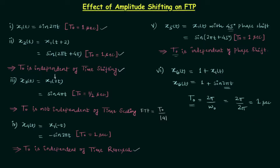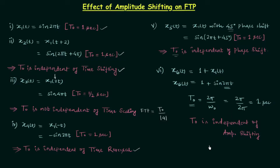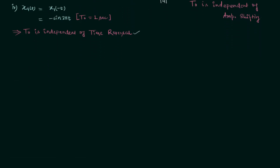So the key point is that T0, the fundamental time period, is independent of amplitude shifting. We have just shown this algebraically using the formula. Now I will show you this by the help of a graph, where we will try to visualize the fundamental time period in both x1(t) and x6(t). Let's quickly plot the graph of x1(t).